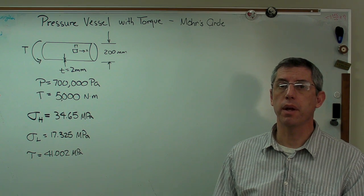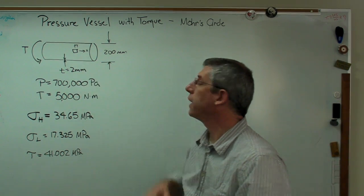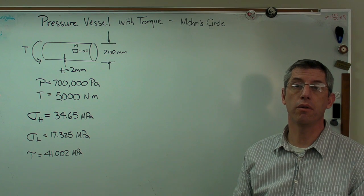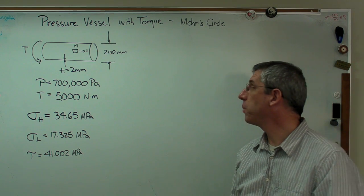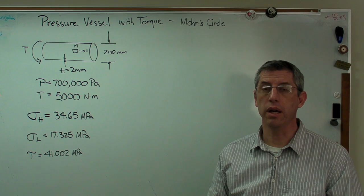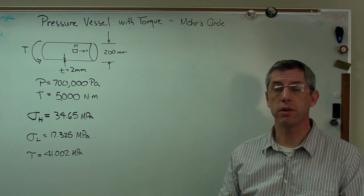In the first part of the clip, or the first clip I should say, we had a thin walled pressure vessel. It's 200 millimeters in diameter with a wall thickness of 2 millimeters. It has a pressure of 700,000 pascals internally and there's a torque applied to the end of 5,000 Newton meters.